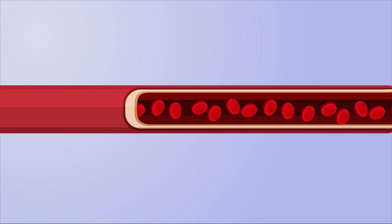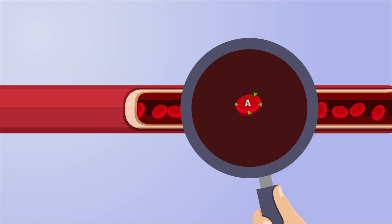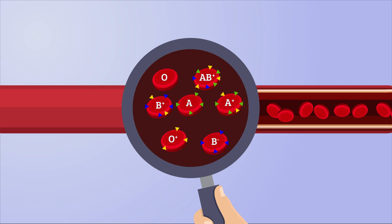Based on the presence or absence of A and B antigens on the surfaces of red blood cells, human blood can be categorized into four broad types: O, A, B, and AB.